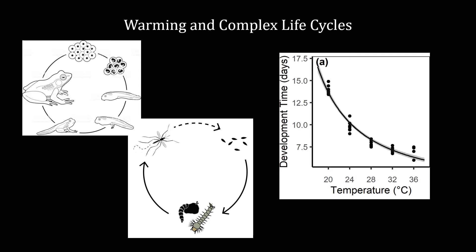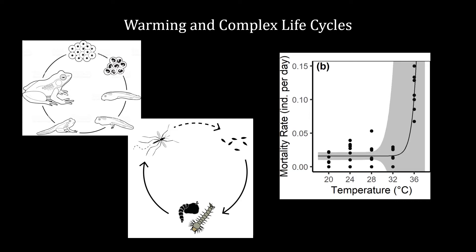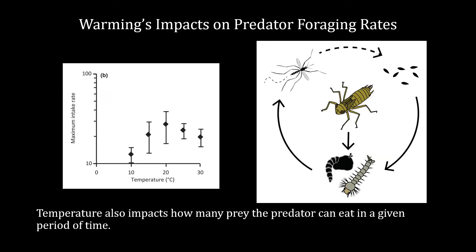However, we've also shown that warmer temperatures have costs associated with them. For instance, when temperatures become too warm at the far end of the spectrum, the majority of larvae don't survive to adulthood. Additionally, warming has impacts on other species in the system too, such as the dragonfly shown here, which is a predator of mosquito larvae. In just the same way that temperature speeds up mosquito larval development, it also speeds up the rate at which these predatory dragonflies are able to eat mosquito larvae.